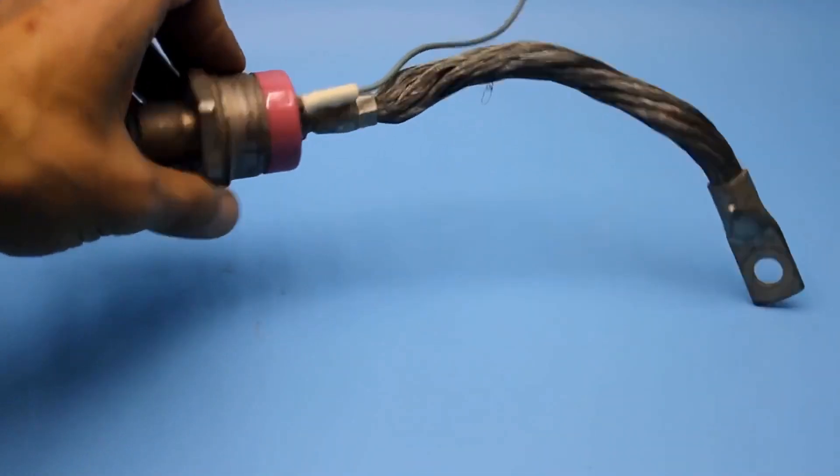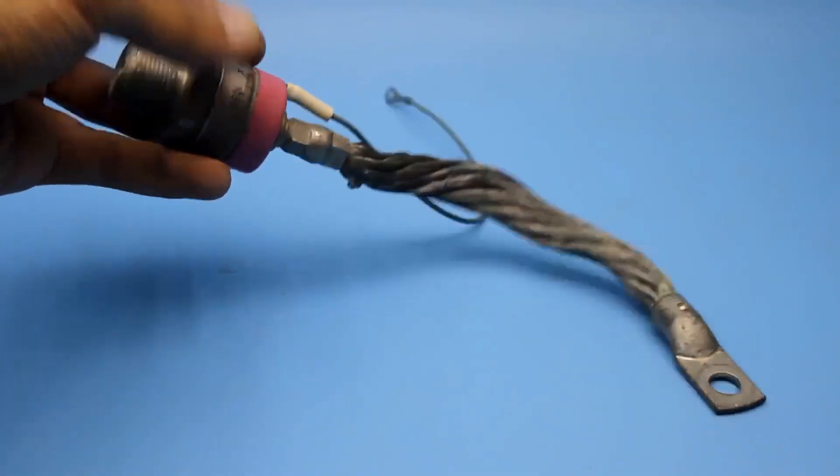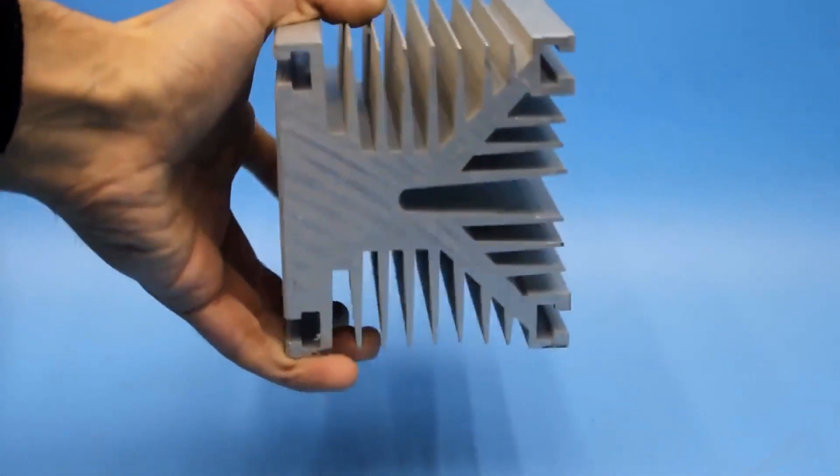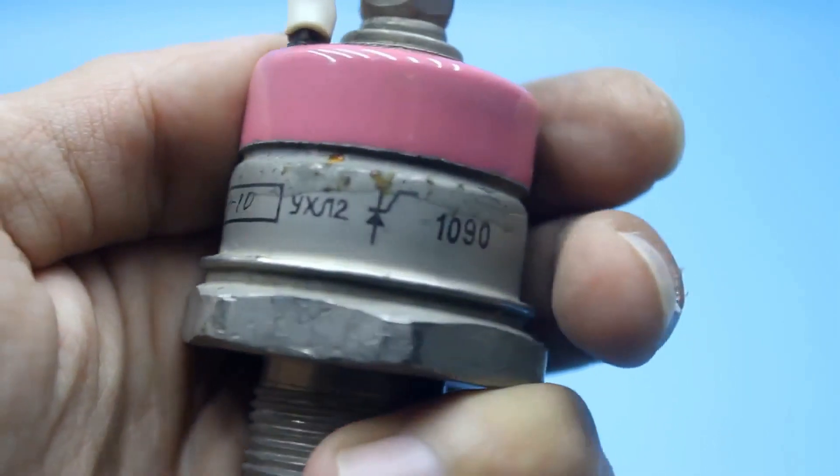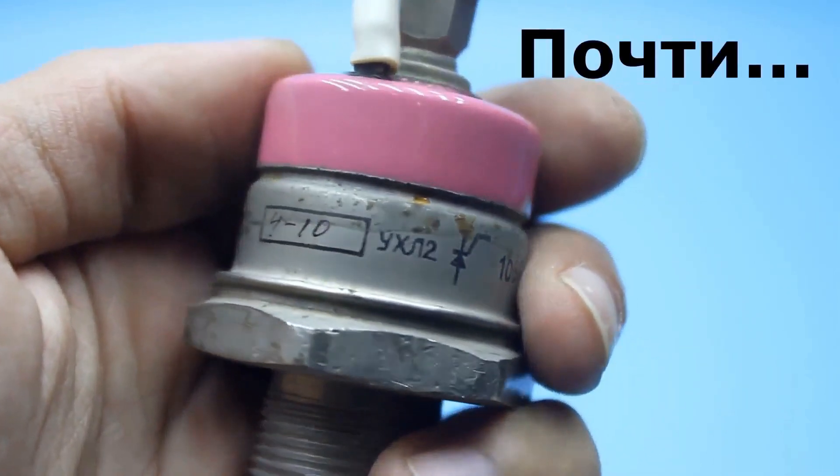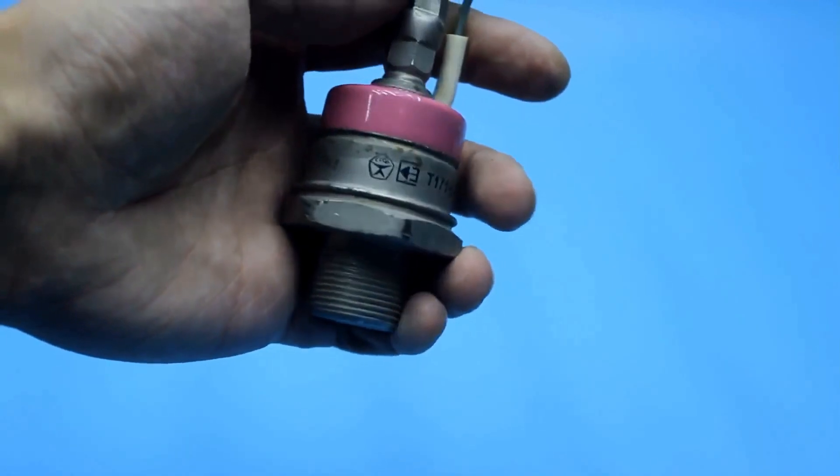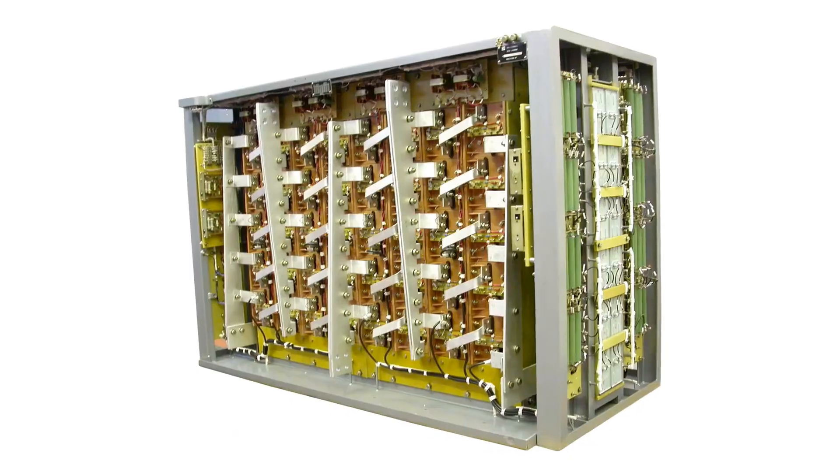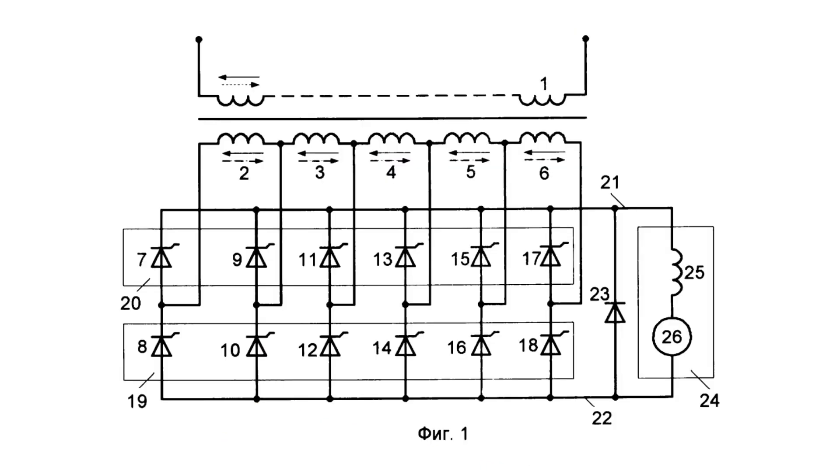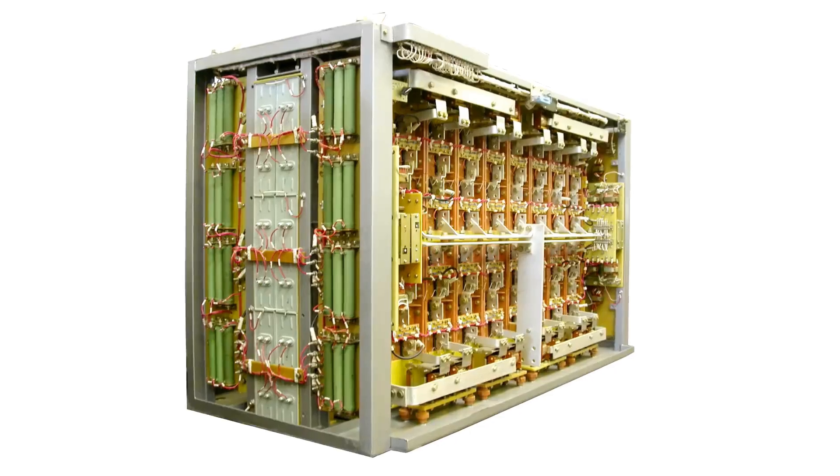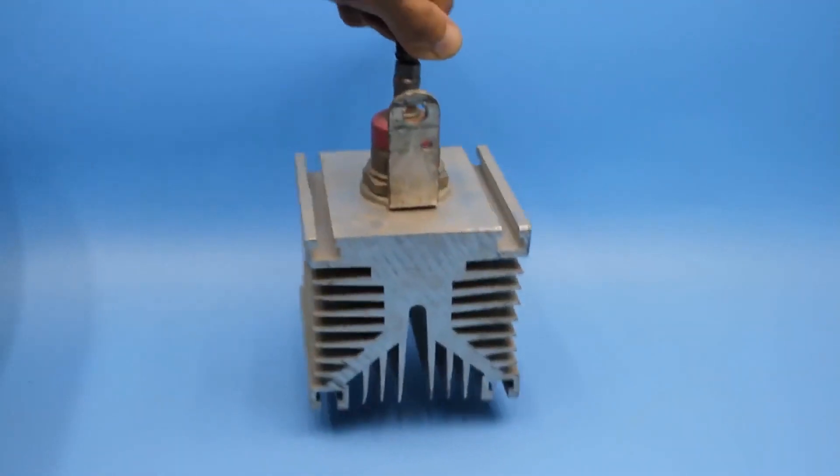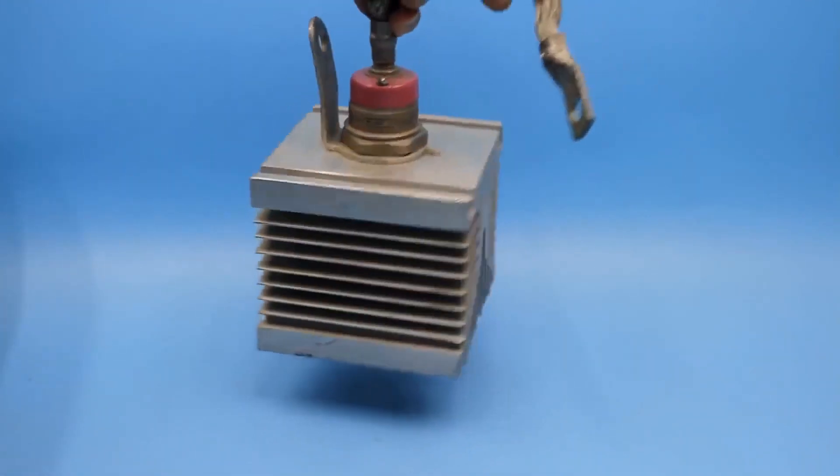Such thyristors are intended for industrial use, and they weren't lying around on every corner. As a rule, they were complemented by a huge aluminum heatsink. The thyristor itself weighs about half a kilogram, and mind you, it's made of pure copper. Where were they used? Everywhere. Mainly in power automation systems, powerful switches, power regulators, rectifiers, and rectifier inverter converters. It can switch loads with power in the tens of kilowatts, but with appropriate cooling of course.